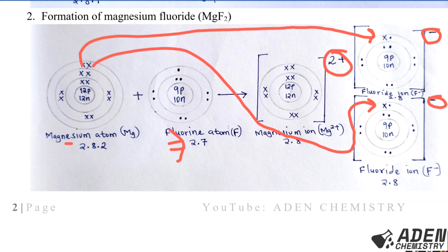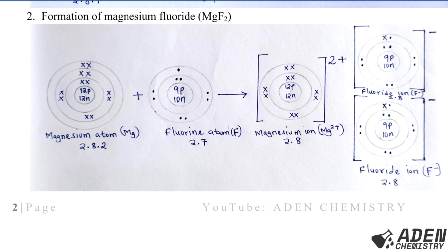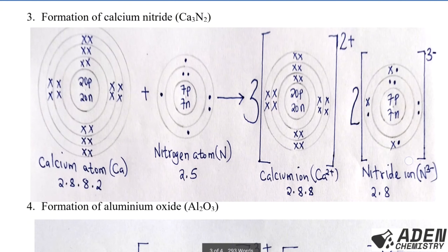If you don't want to draw both fluoride ions fully, you can draw one fluoride ion and then write '×2' beside it, indicating two of the same ion. Let's go to Example 3: formation of calcium nitride, Ca₃N₂.